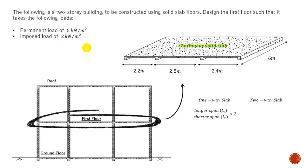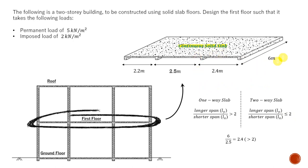Probably the first thing you might start with is to determine whether this system is a one-way or a two-way slab. From the very basic principle, you have this ratio — if you get the longer span divided by the shorter span and it's equal to two or less than two, then what you are dealing with is a two-way slab system. In this case, since this tutorial is about the continuous one-way slab, I've got the longer span of 6 meters divided by 2.5, which gives 2.4 — larger than 2, so I'm dealing with a one-way slab.